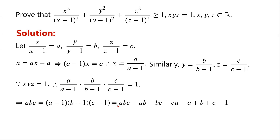By expanding, we can now write abc = abc - ab - bc - ca + a + b + c - 1.